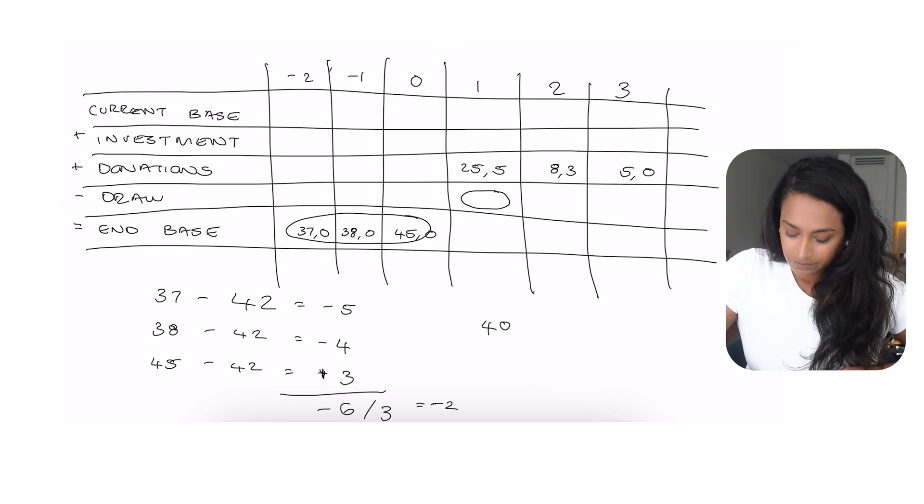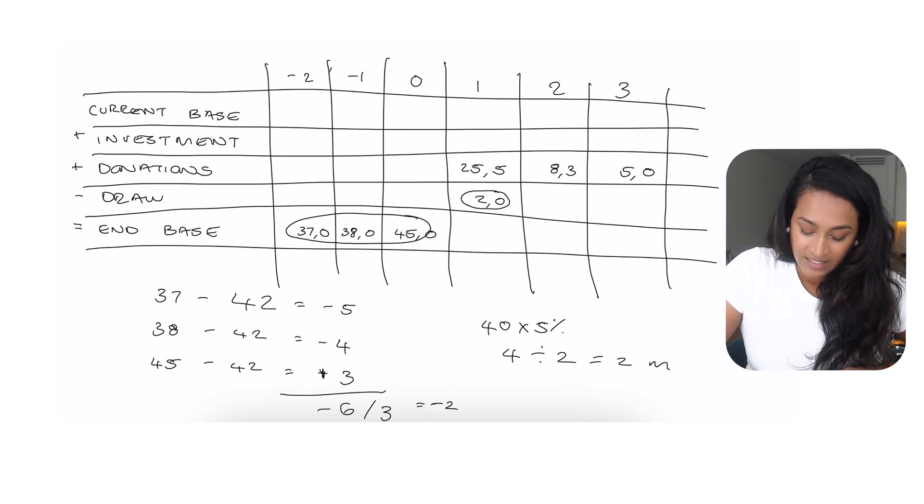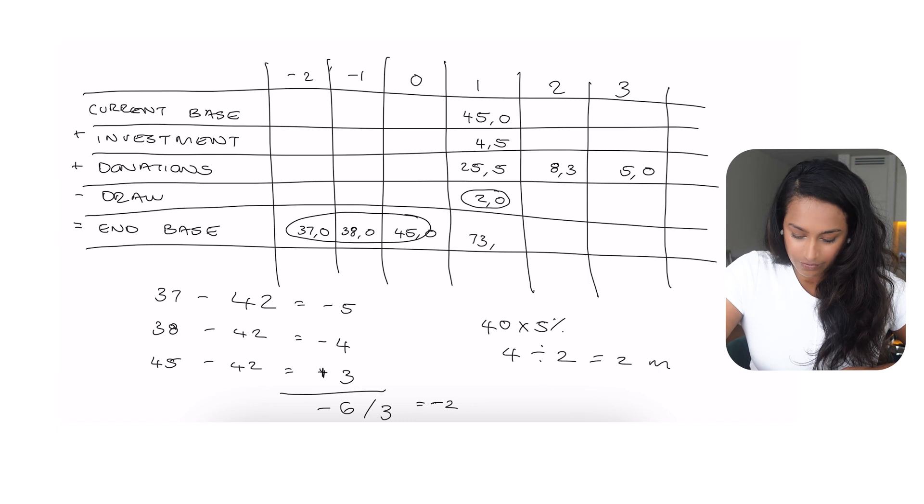Now we want to calculate 5% of this average. So what I like to do is take a 10th and then divide it by 2 to get 5%, because that's just easier for me to do. So 10% of 40 is 4, and 4 divided by 2 is 2. So it's 2 million. Our draw this year is then 2 million. The other thing we need to get our end base at the end of year one is our investment return. And I'll go up here to the top, and you will see that the end base of the prior year becomes the starting base of the current year. So we've got 45 million, which means our investment return, which is 10% of 45 is going to be 4.5 million. Now all I need to do is add the investment gain and the donations to the current base, and then subtract out the draw, the $2 million to get the end base of our current year. So I do this calculation, and I get 73 million.